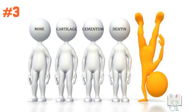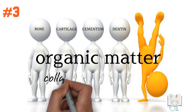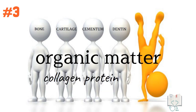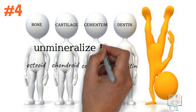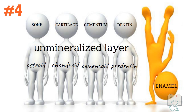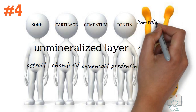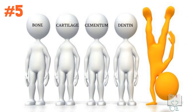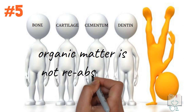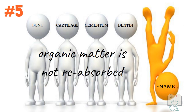All other mineralized tissues in the body have their organic matter formed of collagen proteins, but only enamel has no collagen — it has enamel-specific proteins called enamel proteins. All other mineralized tissues have a completely unmineralized layer during formation, but in amelogenesis no such stage is present; the organic portion shows immediate partial mineralization of 30 percent from the very beginning. Finally, in all other mineralized tissues, once organic matter is secreted it is not reabsorbed, but only in amelogenesis are the enamel proteins absorbed back after secretion.